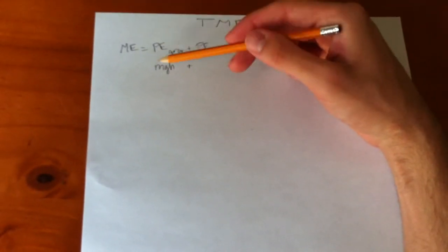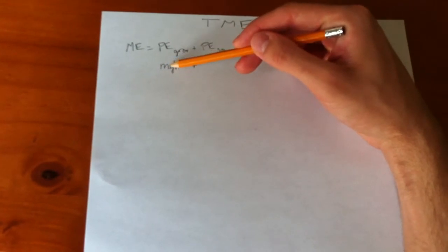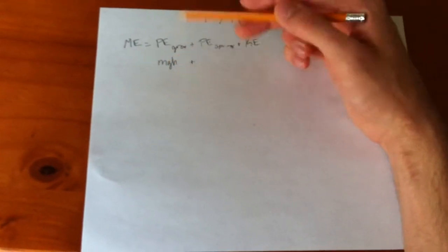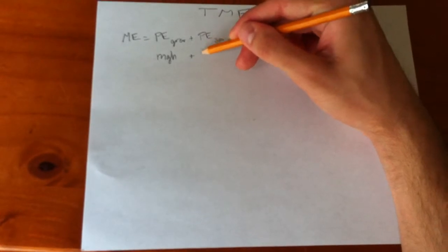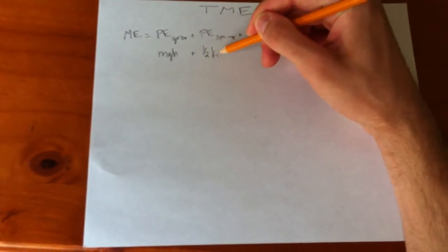The actual values of these are mgh, mass times the acceleration of gravity times the height, plus one-half kx squared.